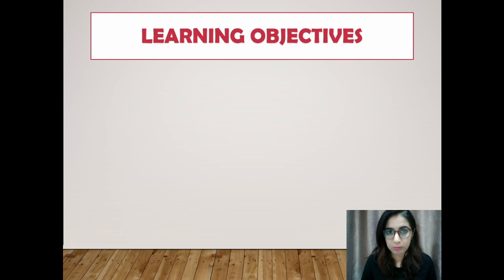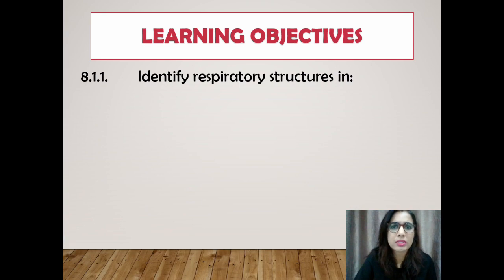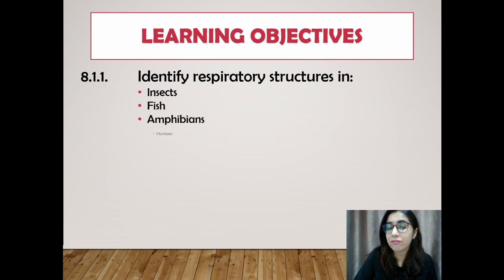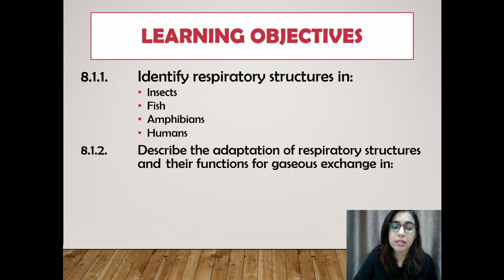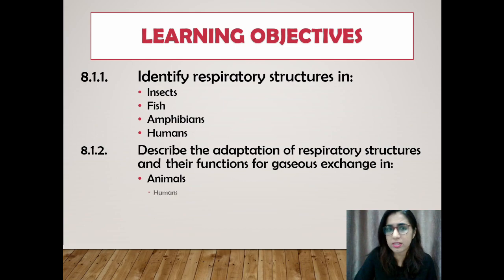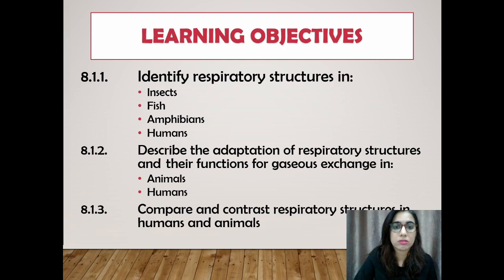So let's look into the learning objectives first before we go further. Firstly, you must be able to identify the respiratory structures in insects, fish, amphibians, and humans. Then you must be able to describe the adaptation of the respiratory structures and their functions for gas exchange in animals and humans. And lastly, you should be able to compare and contrast the respiratory structures in humans and animals.